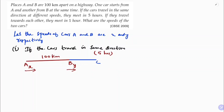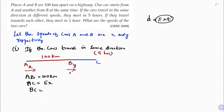A to B is the given distance of 100 km. Distance AC — since distance equals speed multiplied by time — speed is x and time is 5, so AC = 5x. Similarly, distance BC: speed is y and time is 5, so BC = 5y.